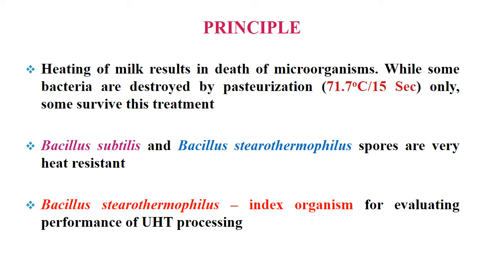Now let us understand the principle of this processing. Heating of milk results in death of microorganisms. While some bacteria are destroyed by pasteurization, some survive this treatment. Pasteurization can kill all pathogens but not all other organisms. Some heat tolerant organisms, especially their spores, can survive the pasteurization temperature of 72 degrees Celsius for 15 seconds. For example, Bacillus subtilis or Bacillus thermophilus spores are very heat resistant and can survive pasteurization. So Bacillus thermophilus is taken as the index organism for evaluating the performance of UHT processing of milk.